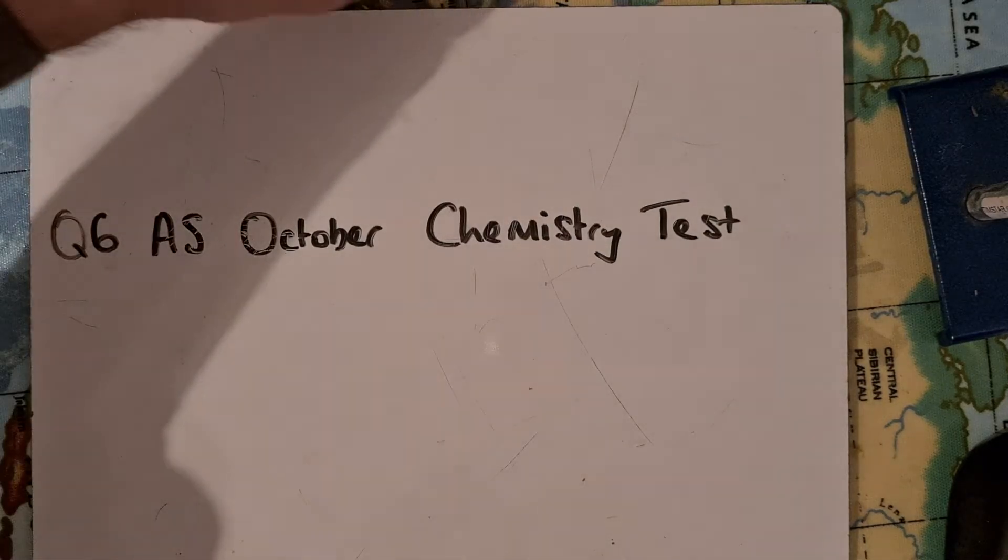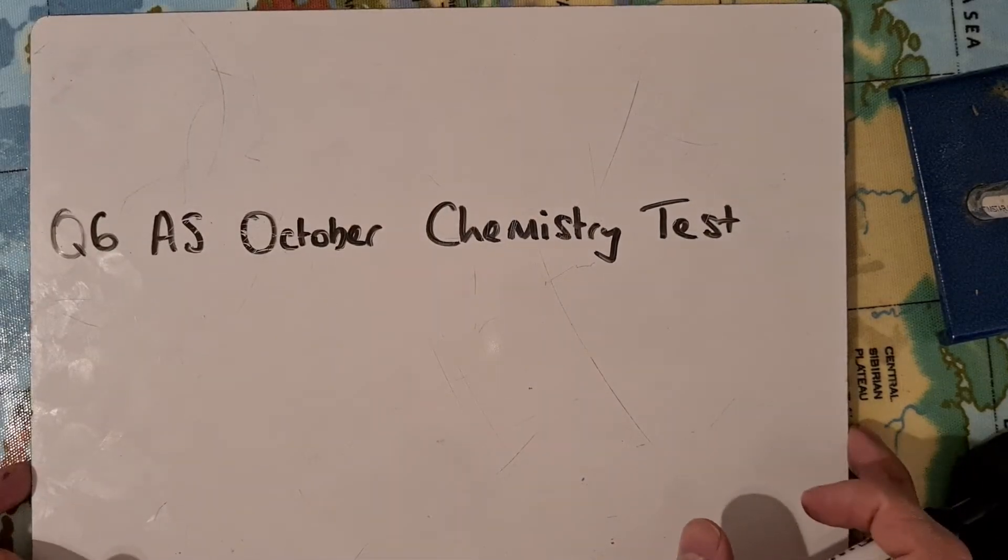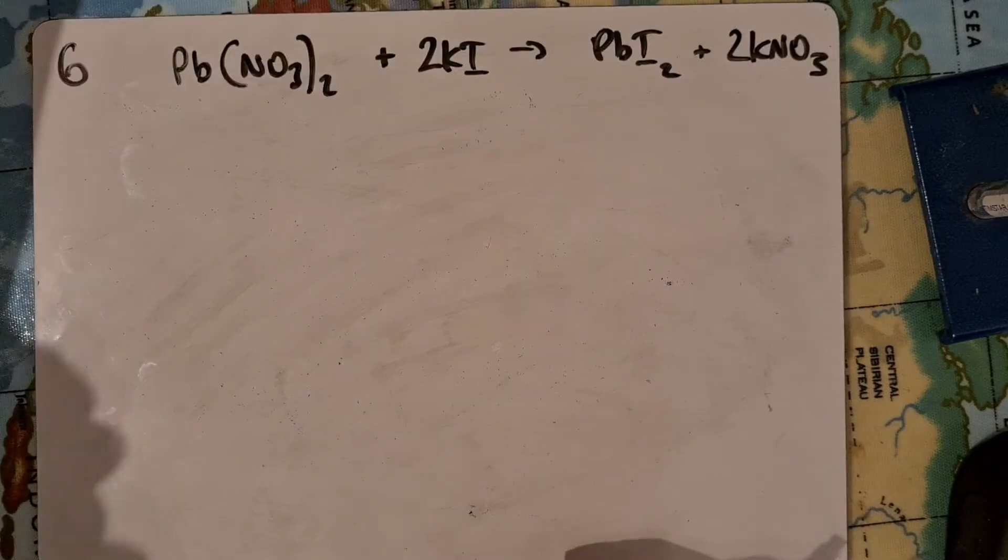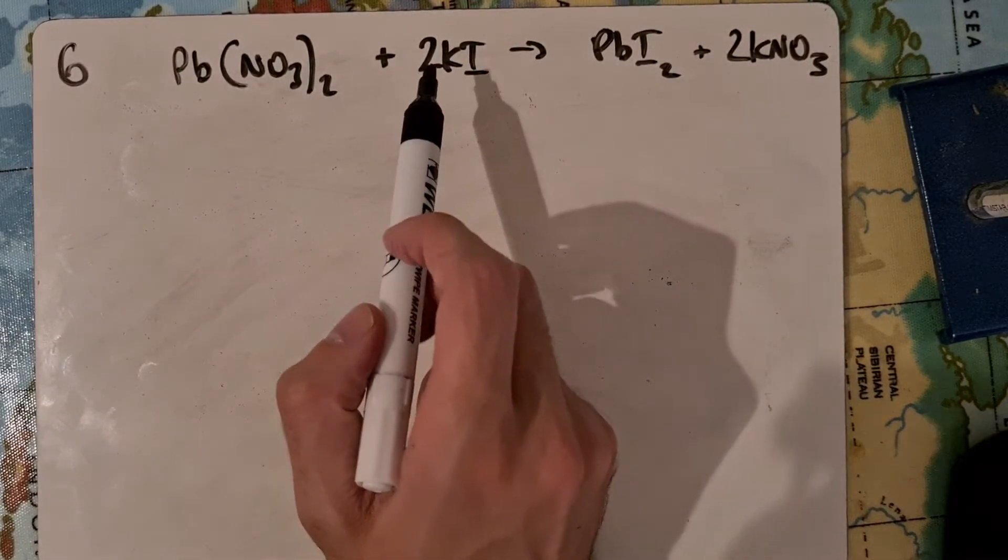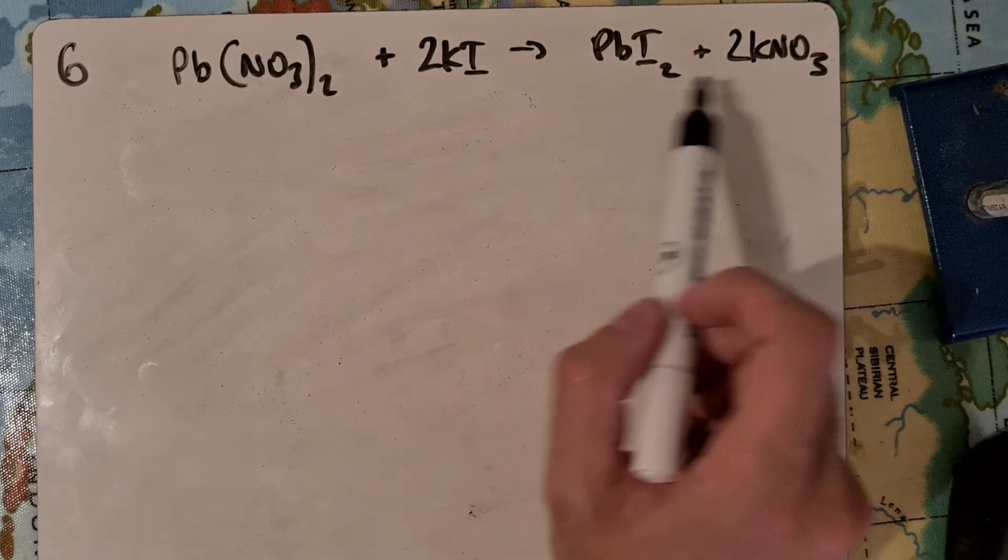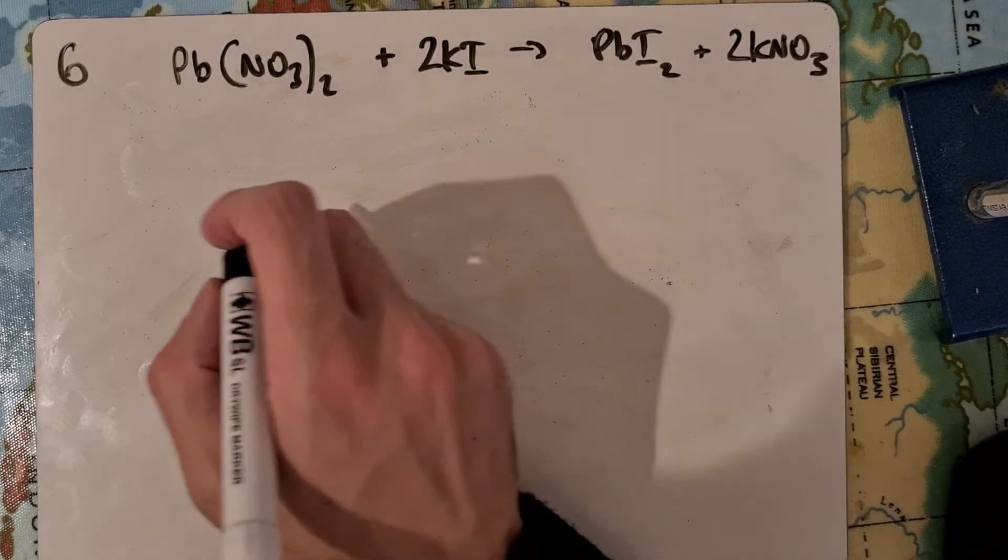Hi, this video is going to look at question 6 from the AS October chemistry test. In it we're going to have lead nitrate reacting with potassium iodide to give us lead iodide and potassium nitrate.